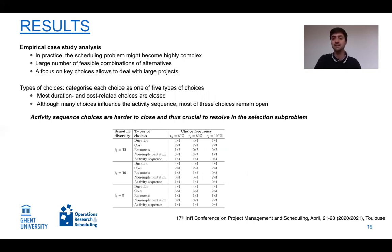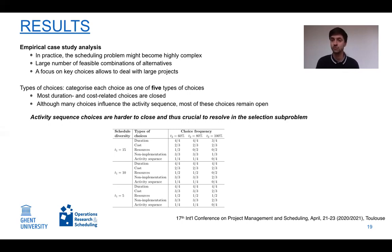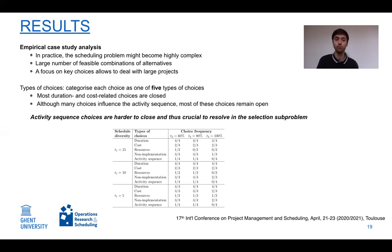We also categorized different types of choices based on real-life case studies. Alternatives exist due to differences in duration, cost, or resources used, the non-implementation of certain activities, or a difference in activity sequence for the work package. Most duration- or cost-based choices could be closed relatively easily, while choices based on activity sequence could be closed with less certainty and remained open most of the time.